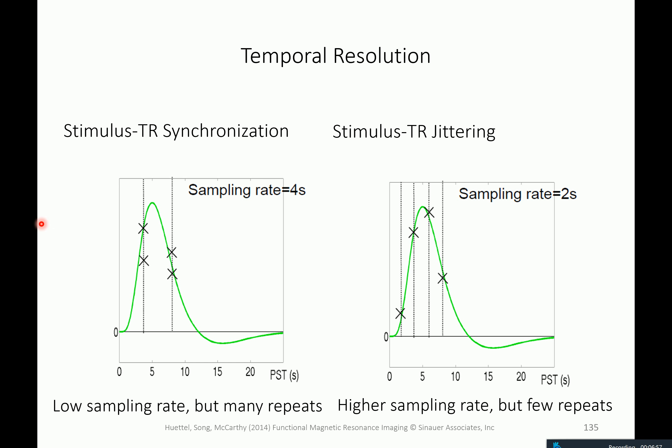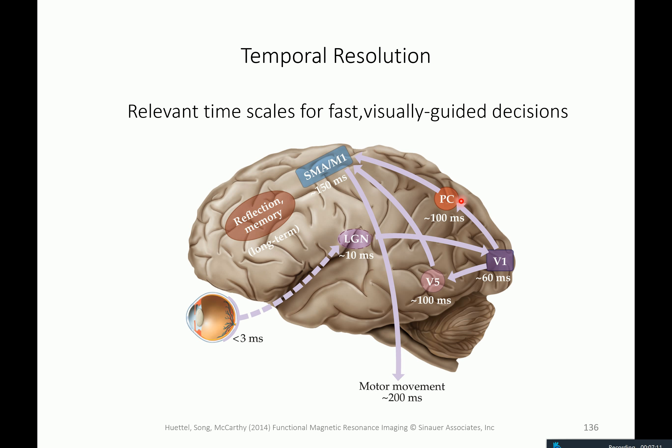For a long time people preferred synchronized designs and nobody really thought about jittering, and now everybody's doing this without much thought. The key issue is that the time resolution of fMRI is in the order of seconds, because TRs are usually in the order of seconds and the BOLD response only peaks around four seconds after stimulus onset. However, interesting cognitive processes — for example in decision making in response to a visual stimulus — happen on a much faster timescale.